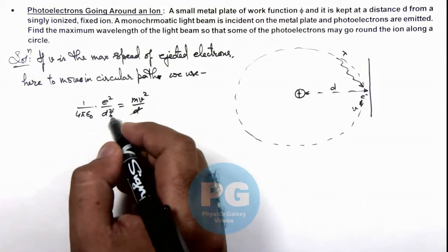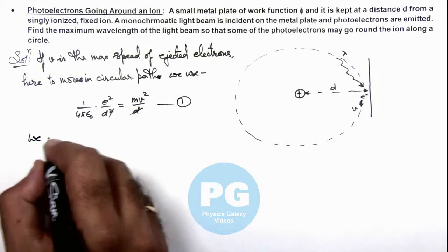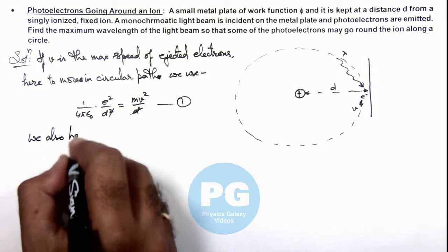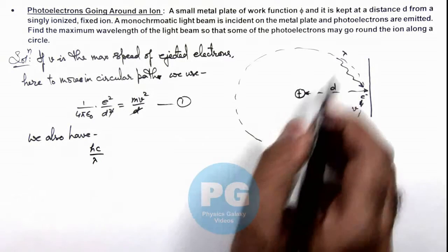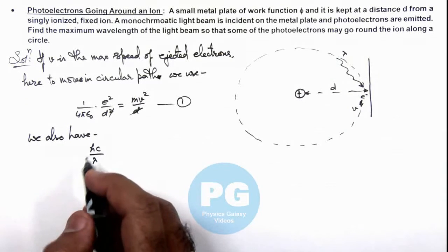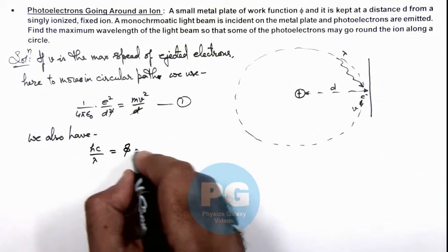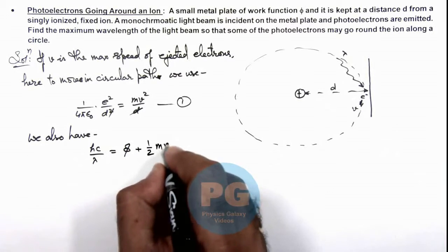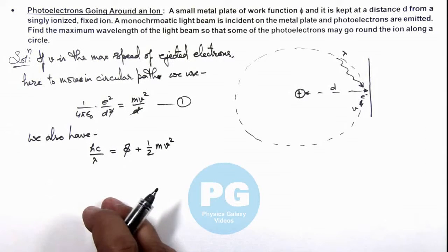We should also use, if we take this as equation 1, we also have, we can write the relation h c by lambda for the wavelength incident on the radiation. This should be equal to work function plus maximum kinetic energy, which we can write as half m v square, as we have taken v the maximum speed.